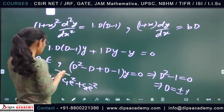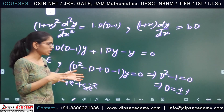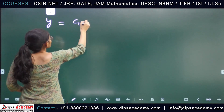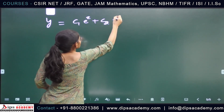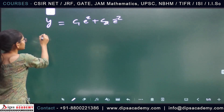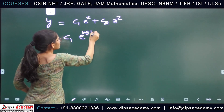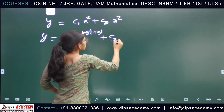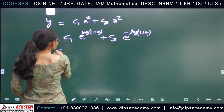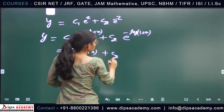Since we have a homogeneous equation, there is no particular integral, and the complete solution is just the complementary function: y = c₁eᶻ + c₂e⁻ᶻ. Converting back to x using z = log(1+x), this becomes y = c₁(1+x) + c₂/(1+x).